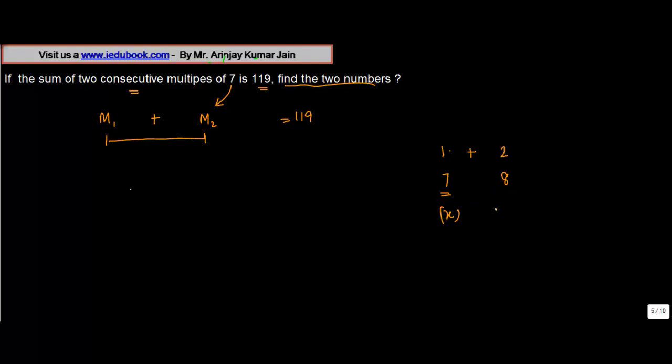Then the second consecutive number will be x plus one. If the number is one, the consecutive is two. If it is seven, it is eight, because seven plus one. So if the number is x, then it has to be x plus one.